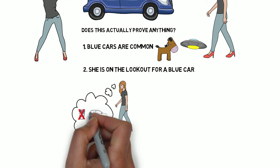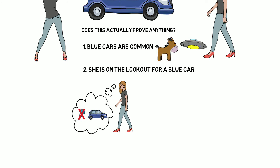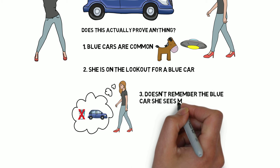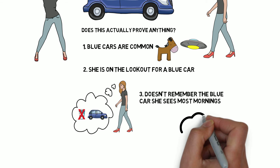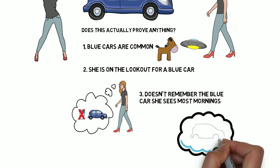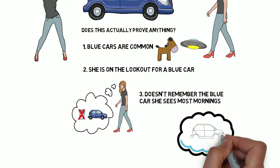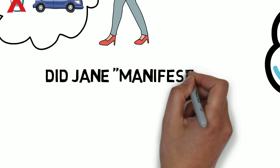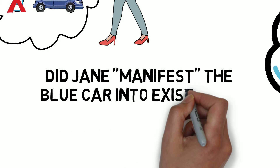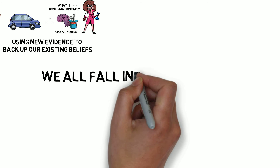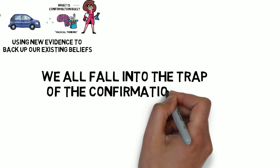Her subconscious brain will make sure she consciously becomes aware of the blue car when she sees it. Thirdly, this is a street that Jane has walked down many times before. Without her knowing it, she may have come across a blue car driven by one of the locals on many previous occasions — she didn't consciously notice it because she was thinking about the coffee. So can we really count seeing the blue car as evidence of Jane's magical power to manifest change in her physical environment with her mind?